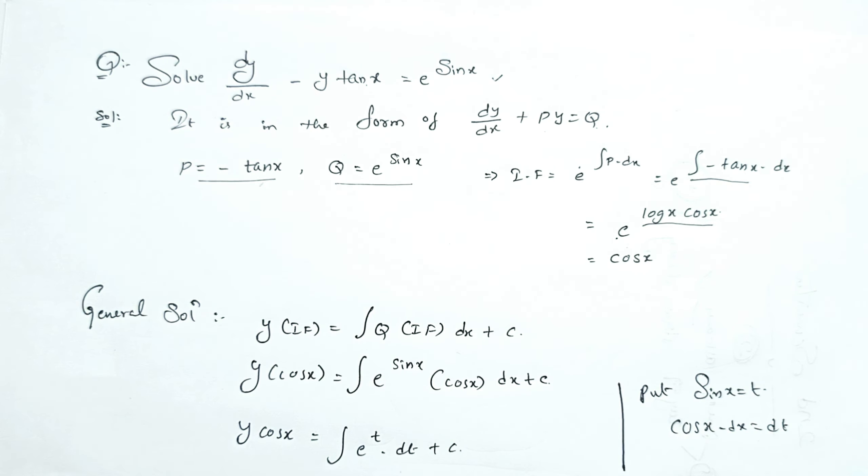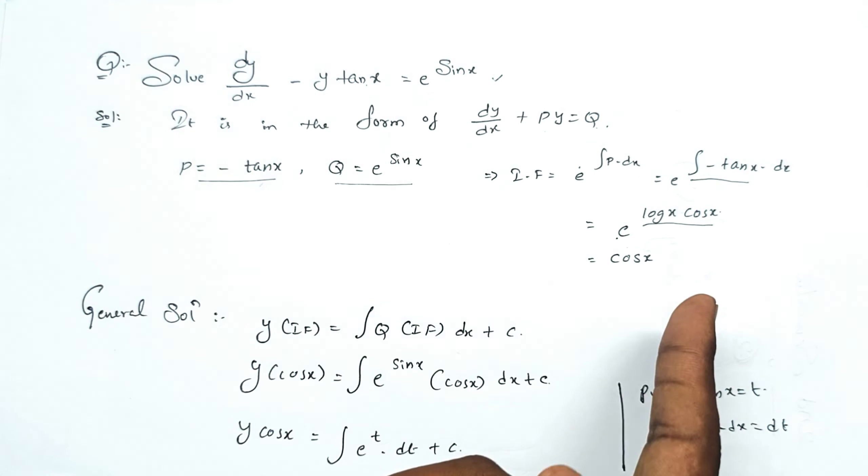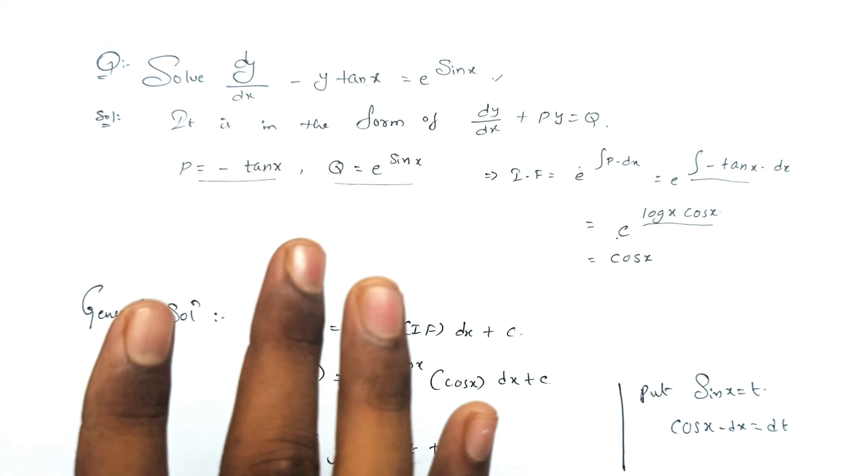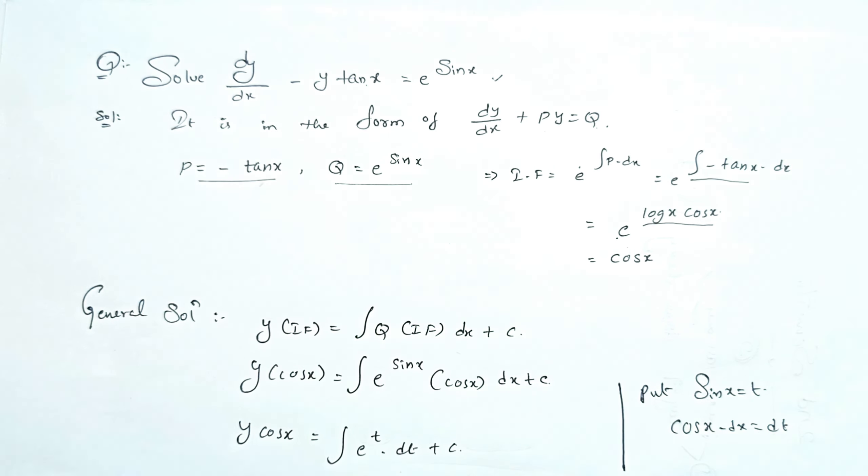Since e^(log cos x) simplifies — e and log cancel — the integrating factor is cos x. Clear? Now I am going to show the general solution.